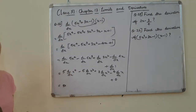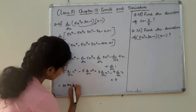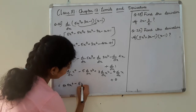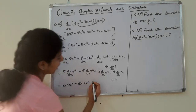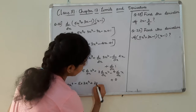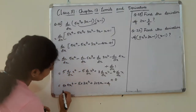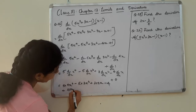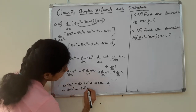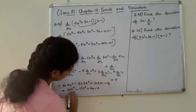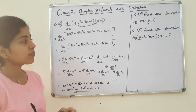The derivative gives: 4x cube, minus 5 times 3x square, plus x square derivative 2x, minus 4 times 1. This simplifies to 20x cube minus 15x square plus 6x minus 2. This is the answer.